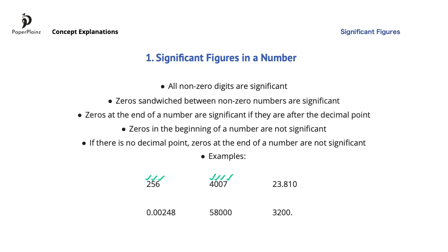Zeros at the end of a number are significant if they are after the decimal point. So the 0 at the end of 23.810 is significant, along with all other numbers. However, zeros in the beginning of a number are not significant, so the 3 zeros in 0.00248 are not significant. Because of the first rule, 2, 4 and 8 are significant.